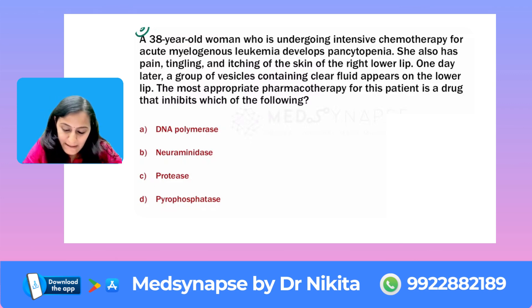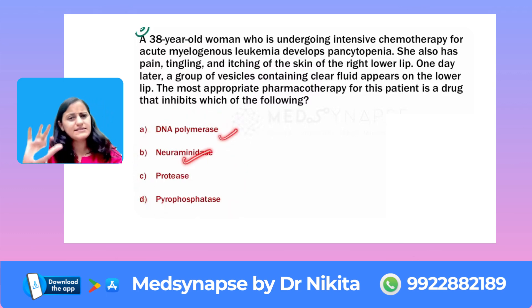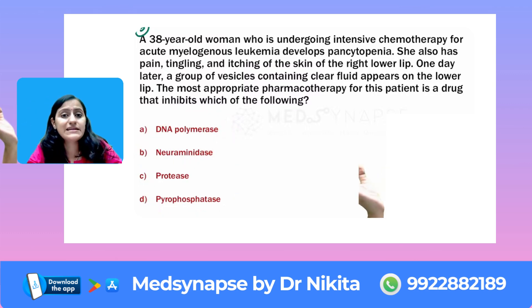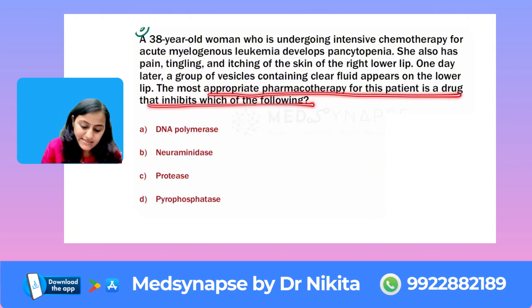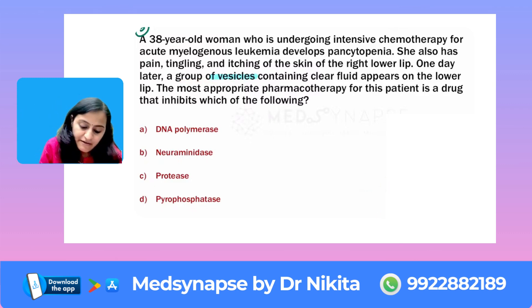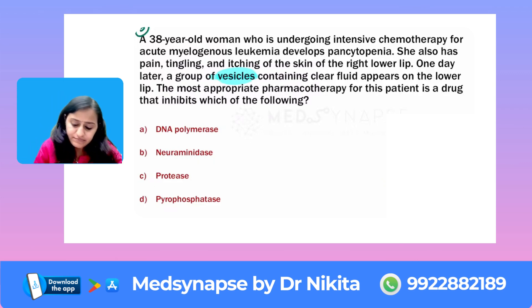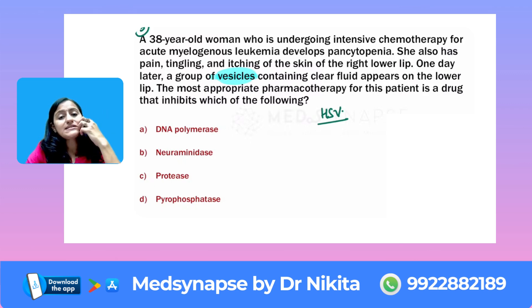These are the options we are seeing — neuraminidase, polymerase — so from there you know that something is related to antiviral. The question asks: the most appropriate pharmacotherapy for this patient is a drug that inhibits which of the following? One day later there's a group of vesicles containing clear fluid on the lower lip. Whenever I see grouped vesicles, I think of HSV — herpes simplex virus — because herpes, whether oral or genital, presents with vesicles.